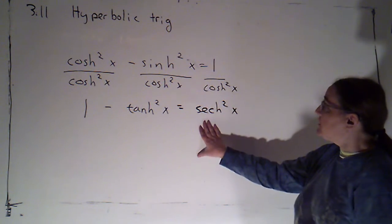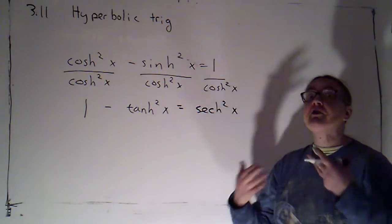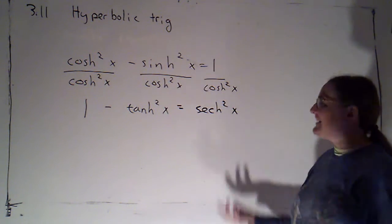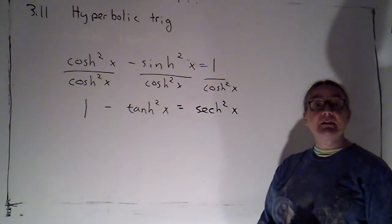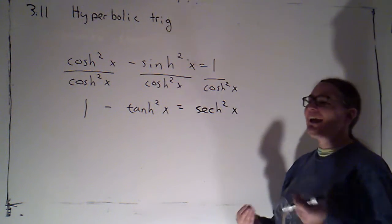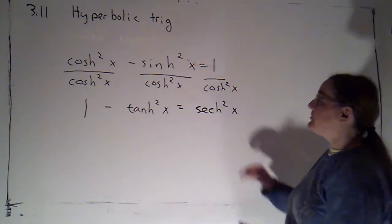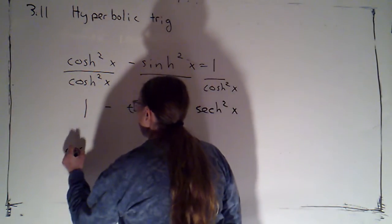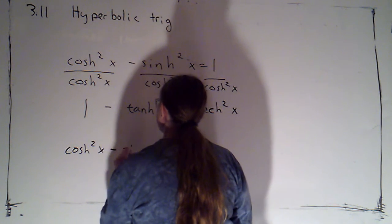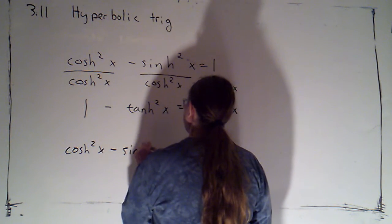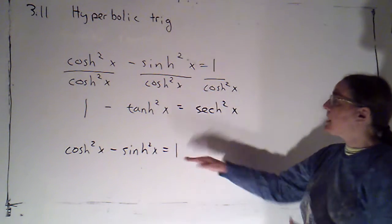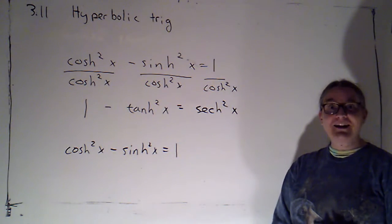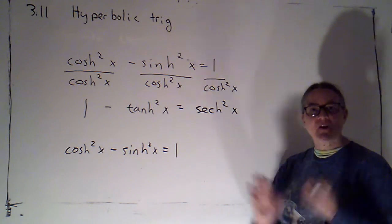So what I want you to do is derive the third of these related identities, the one that gives me a relationship between coth squared and csch squared. So you're going to start with cosh squared x minus sinh squared x equals one, but this time just divide through by sinh squared and simplify that. Go ahead and work that out.